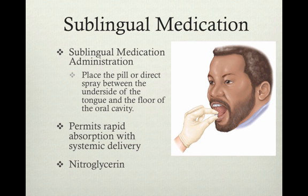Sublingual medication administration: place a pill or indirect spray between the underside of the tongue and the floor of the oral cavity. You may actually have to help people with this, as some people don't have good tongue control. This permits rapid absorption with systemic delivery. An example of a sublingual medication is nitroglycerin.